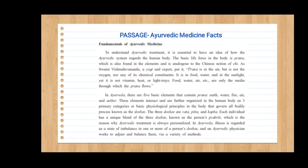Now we will see one example which has been solved for you. The passage is about Ayurvedic medicine facts — 'Fundamentals of Ayurvedic Medicine.' To understand Ayurvedic treatment, it is essential to have an idea of how the Ayurvedic system regards the human body. In the first line, we understand what the passage is about — it is about Ayurvedic medicine facts. The basic life force in the body is prana, which is also found in the elements and analogous to the Chinese notion of Chi.